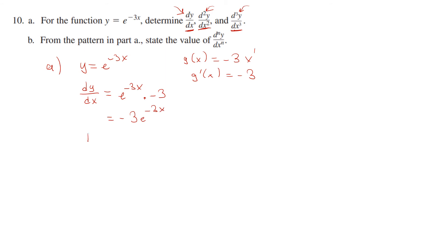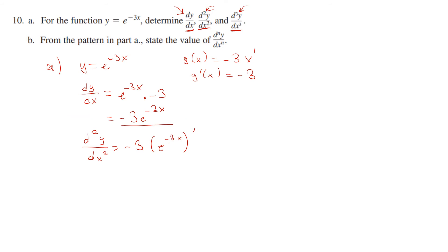The second derivative means taking the derivative again. Keeping the constant negative 3 the same and differentiating e to the power of negative 3x gives another factor of negative 3. So the second derivative is negative 3 times negative 3 times e to the power of negative 3x, which equals 9e to the power of negative 3x.